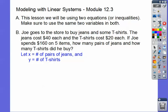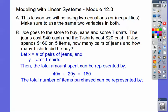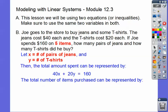We're going to let X be the number of pairs of jeans and Y be the number of t-shirts. The total amount of money spent can be represented by, each pair of jeans costs $40, so we bought X pairs, so it's going to be 40X. Each t-shirt is $20, so that's 20Y, and it's going to equal $160. The total number of items purchased, we have X amount of jeans and Y amount of t-shirts, and that's going to give us five total items, so X plus Y equals 5.